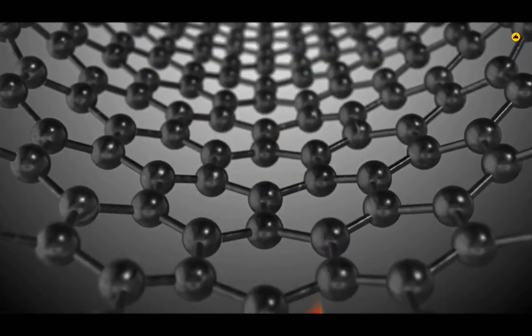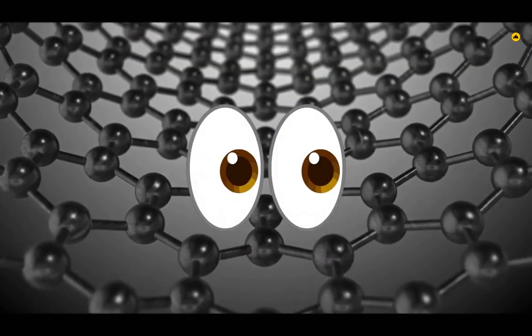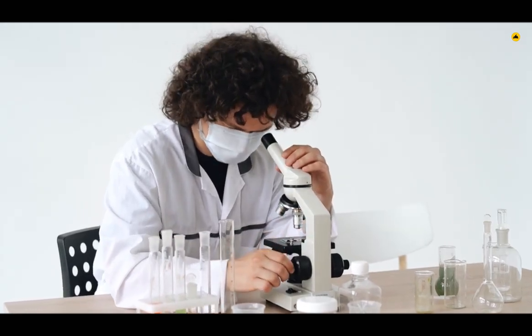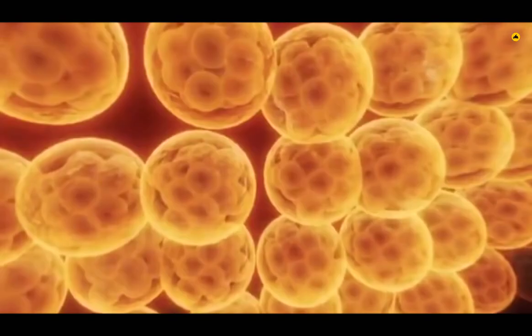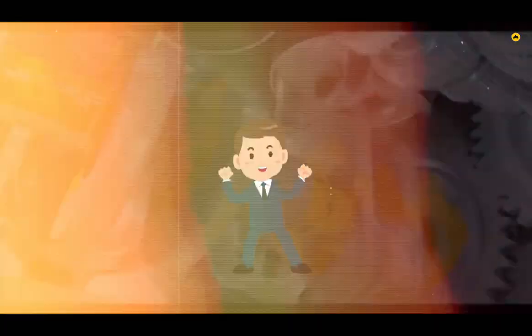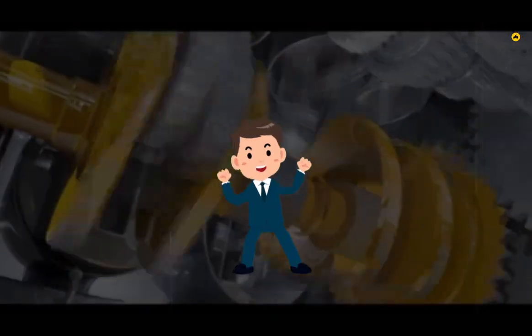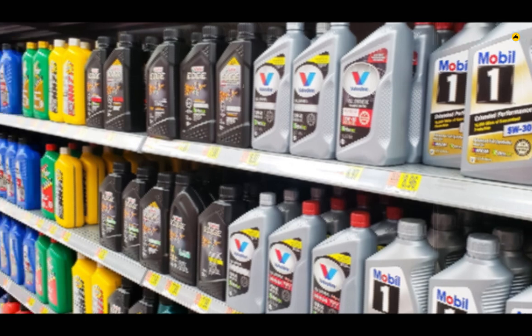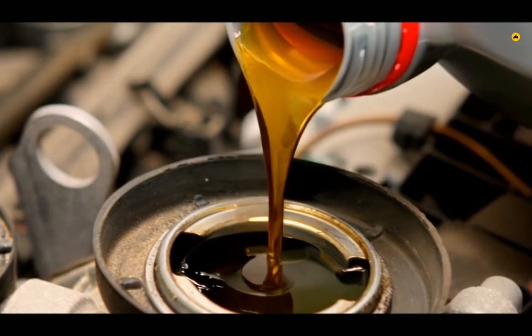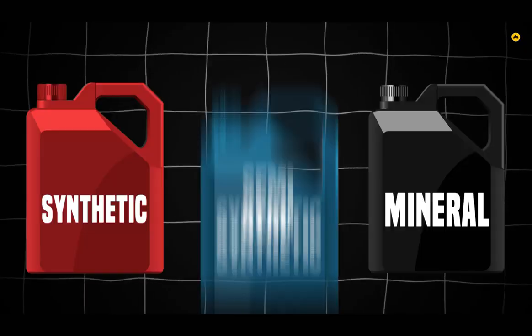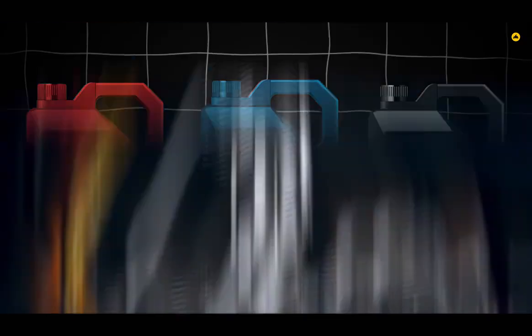We can't see these molecules with the naked eye, but if you try to look at engine oil with a microscope, you'll see these tiny round particles. So we have understood how engine oil works. Engine oils are generally of three types: mineral, synthetic, and semi-synthetic.